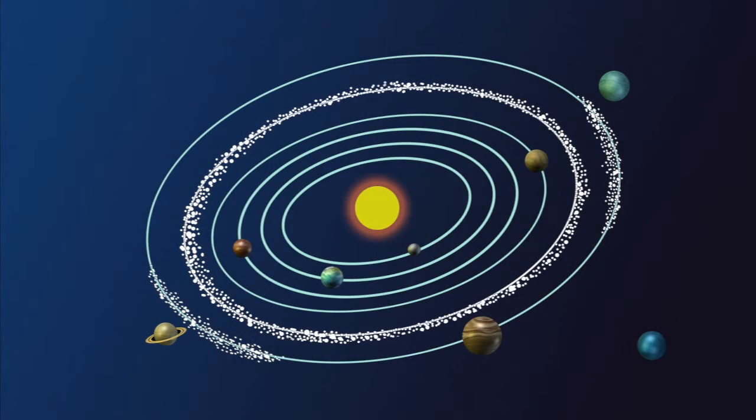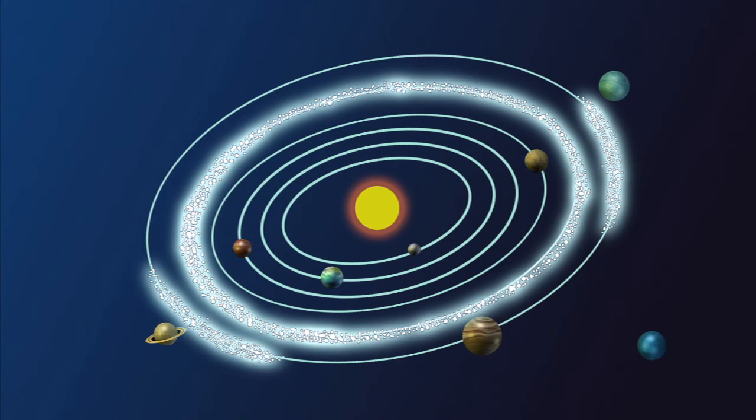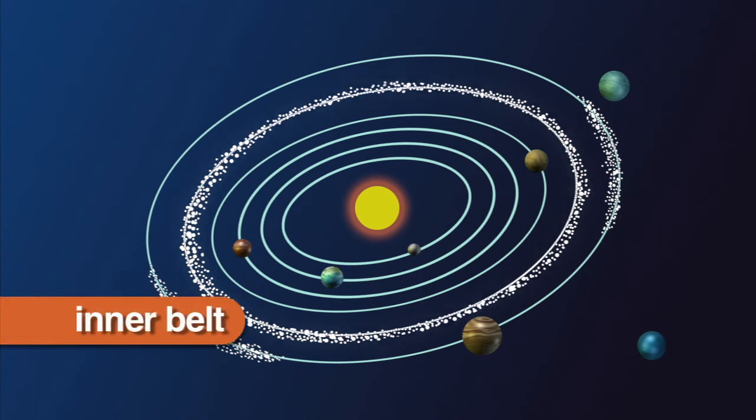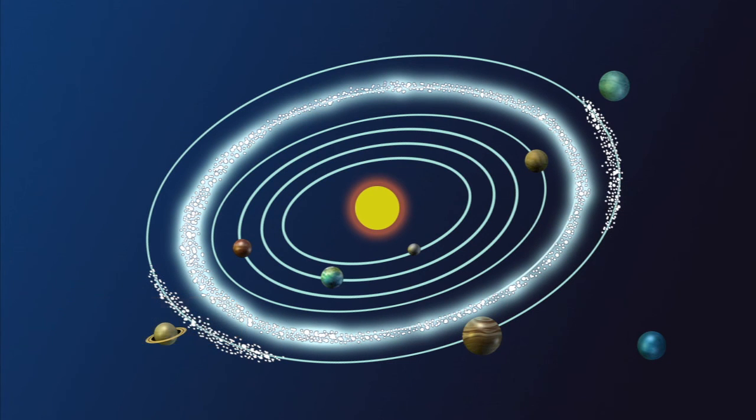The asteroid belt is divided into an inner belt and an outer belt. The inner belt, which is closer to the Sun, contains asteroids that are made of valuable metals.